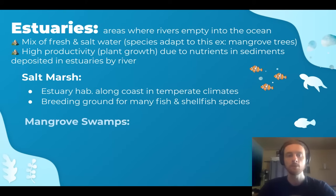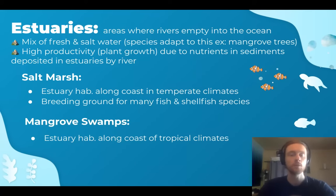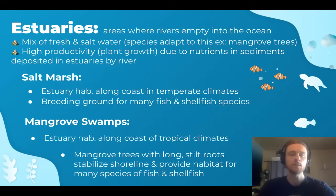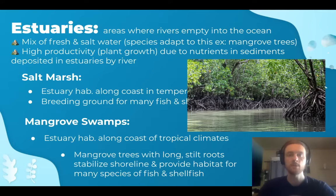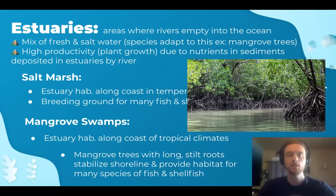Mangroves are a really unique habitat — estuaries found only in tropical climates. Mangrove swamps are characterized by mangrove trees, which have super long stilted roots. The roots are key to the habitat: they stabilize the shoreline by anchoring the soil in place, protect it from storm surges and high winds, and can absorb a lot of water during excess rainfall, preventing flooding. They also provide a vital habitat for many fish species that swim among the roots to find protection from predators and food to eat.